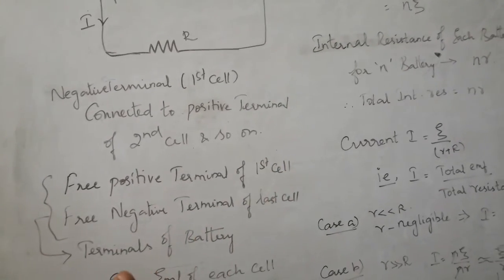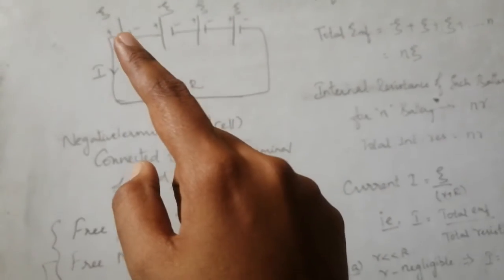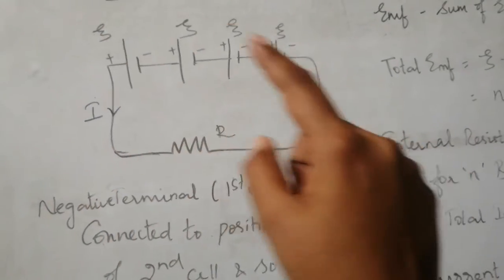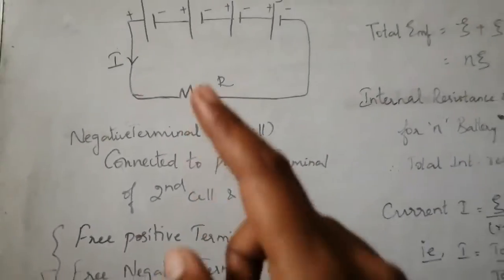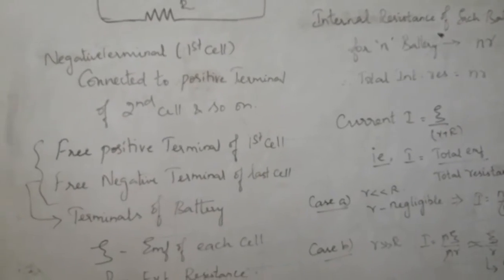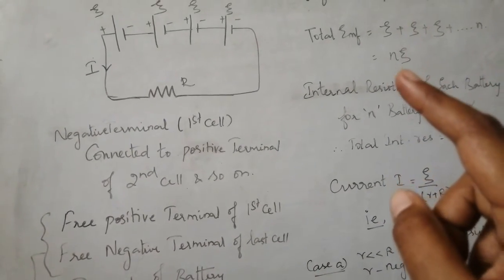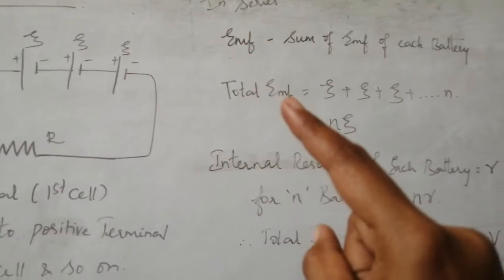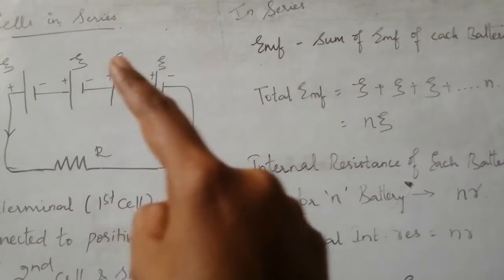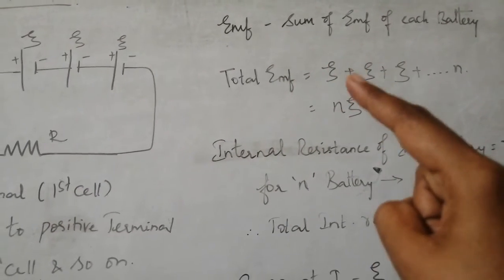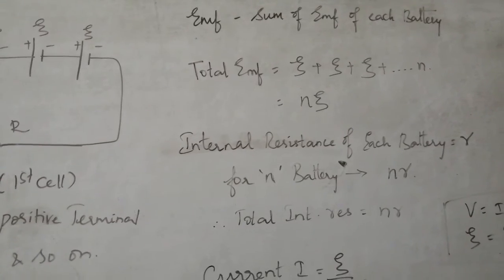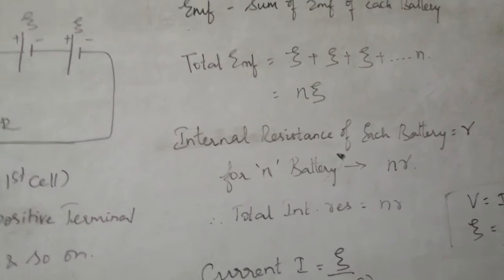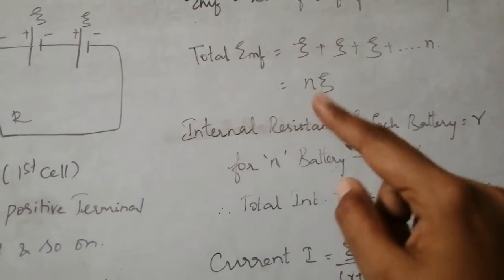The EMF of each battery is the same — denoted as ψ. When you connect N number of such batteries, the total EMF is N·ψ. So the total EMF equals ψ + ψ + … (N terms), which simplifies to N·ψ. This is the total EMF for a series connection.